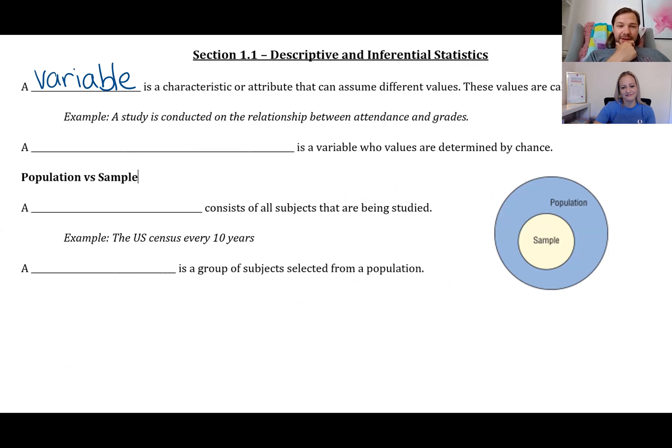A variable is a characteristic or attribute that can assume different values. These values are called data. An example: a study is conducted on a relationship between attendance and grades. Do you think if you show up to class, you're going to do well? There's probably a strong correlation between showing up and watching the video lectures and doing your homework and getting better grades. What's the variable there? Well, there's two of them: attendance and grades. Your attendance can be either yes or no, and the grades is either A, B, C, or D, or some percentage.